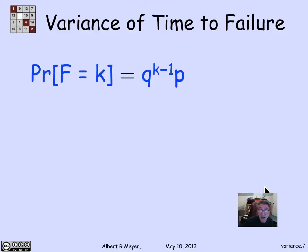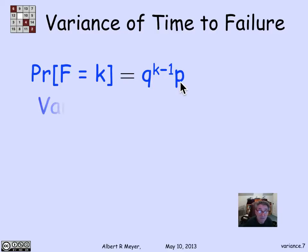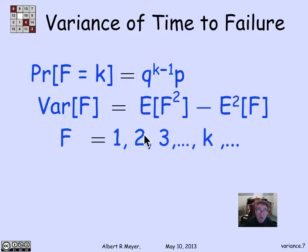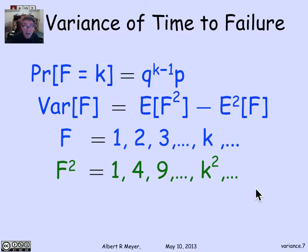One way is to plug in the definition of expectation directly. The probability that it takes k hours to fail is the geometric distribution: q^(k-1) times p. Using our formula, the variance of f equals E[f²] minus (1/p)², so we focus on calculating E[f²]. Since f takes values 1, 2, 3, ..., f squared takes values 1, 4, 9, k² — and those are the only values we sum over.